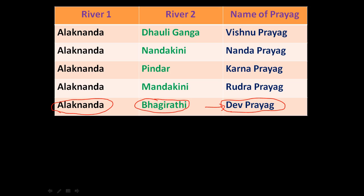But before Dev Prayag there are five other Prayags. First, the Alaknanda meets the Dhauliganga at Vishnu Prayag. Then the Alaknanda meets Nandakini at Nanda Prayag, meets Pindar at Karna Prayag, meets Mandakini at Rudra Prayag, and finally the Alaknanda meets Bhagirathi at Dev Prayag, and henceforth it is known as the Ganga.